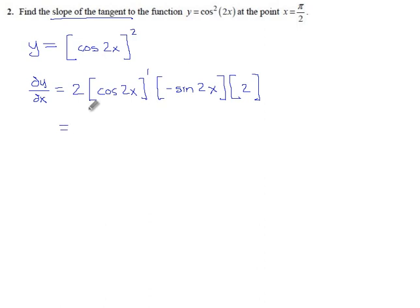If we clean that up, 2 times a negative sine makes negative 2, times another 2 makes negative 4. That's our coefficient, and then we have cosine 2x and sine 2x.